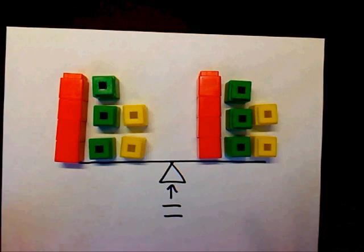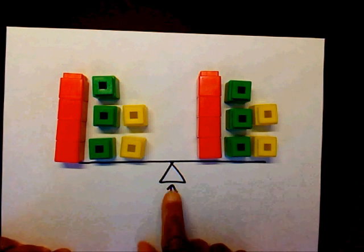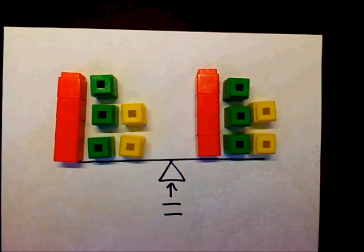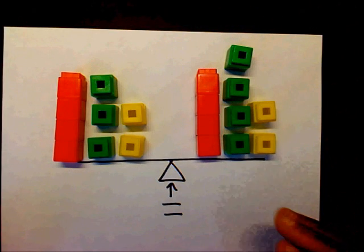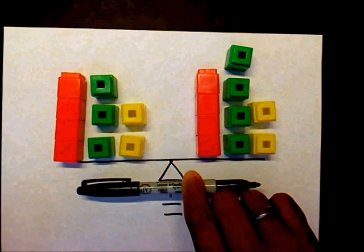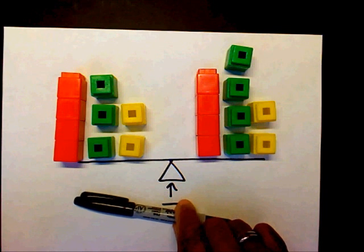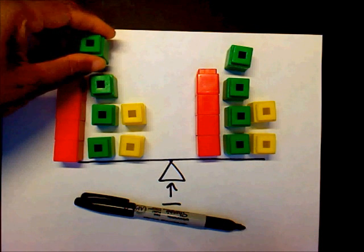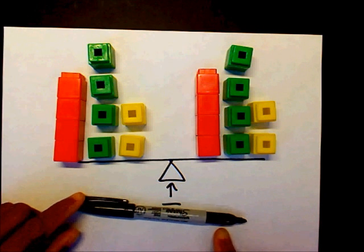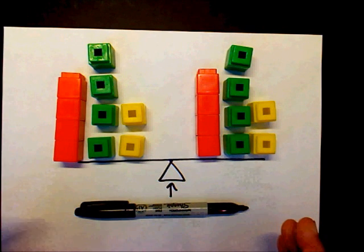An equation is nothing more than a balance scale. I like to look at it as a balance scale where the balance represents the equal sign. In order for this balance to remain equal, if I add one green to this side, that causes the balance scale to tip this way. In order for me to allow this equation to be balanced again, I have to place another green on the other side.